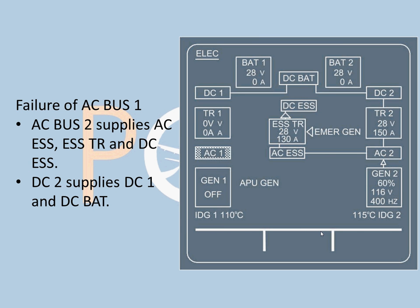Failure of AC bus 1: AC bus 2 supplies the AC essential bus, the essential TR, and DC essential. DC bus 2 supplies DC bat and DC bus 1. So this left-hand connection is cut off, and generator 2 supplies the whole network — through DC 2, then DC bat and DC 1 as well.